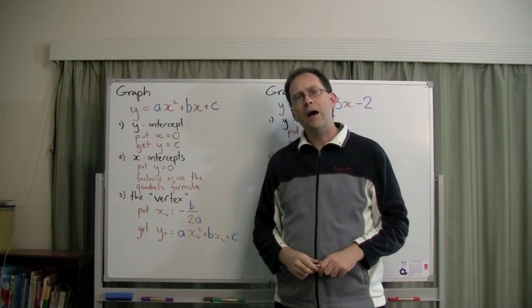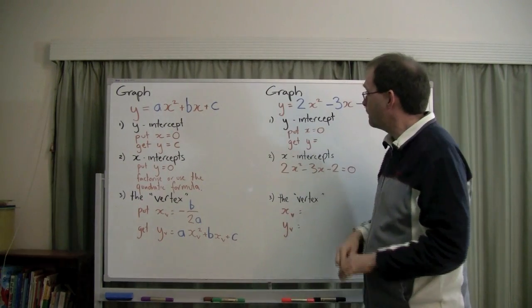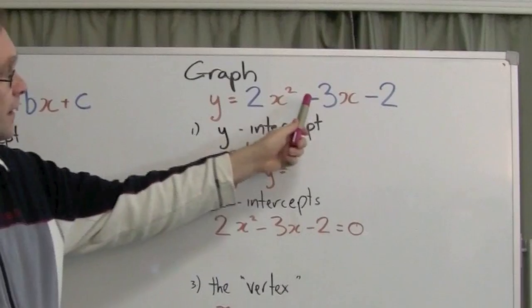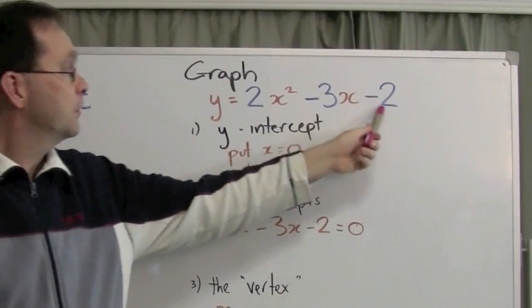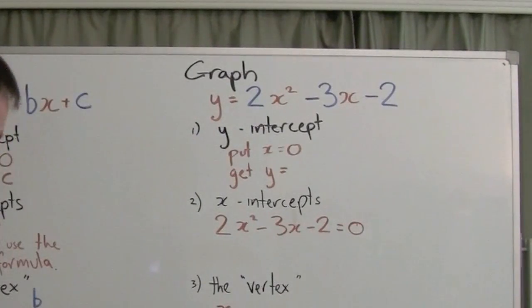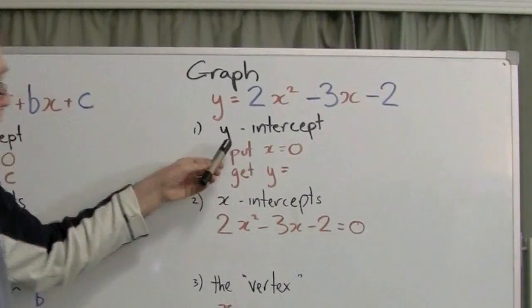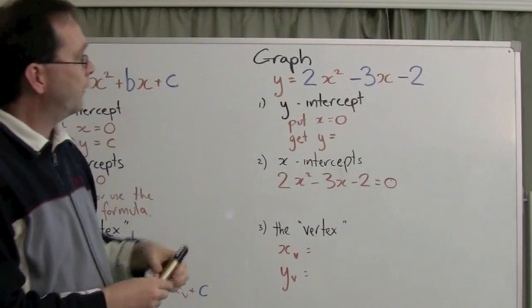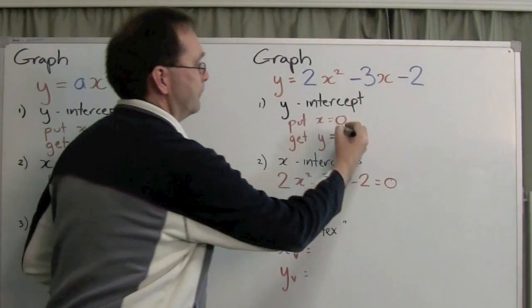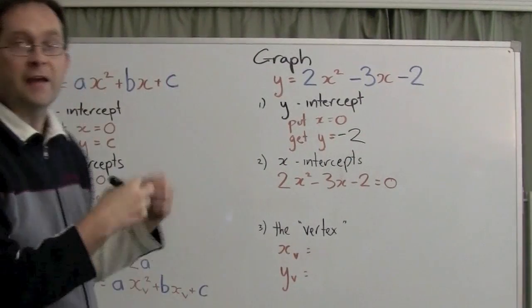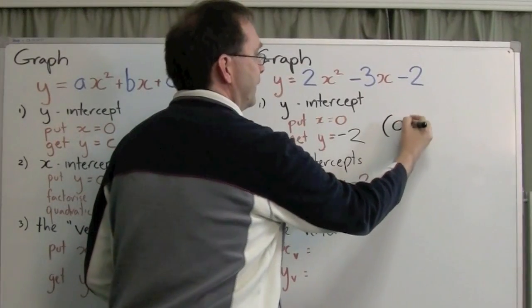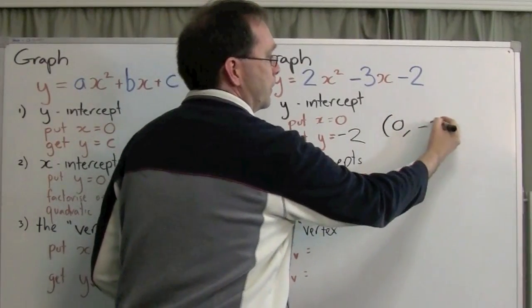Let me do an example for you. Here we've got y is 2 times x squared minus 3 times x minus 2. To get the y-intercept, you put x equals 0. That gives y equals c, which in this case is minus 2. Let me write that down. So that gives me one point on the parabola already. I know my parabola has the point 0, minus 2.